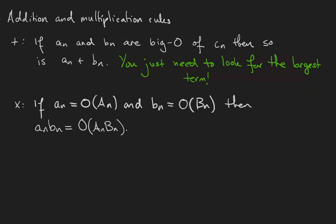If little aN is big O of big AN, and little bN is big O of big BN, then their product is big O of big AN times big BN. In other words, growth rates are multiplicative.